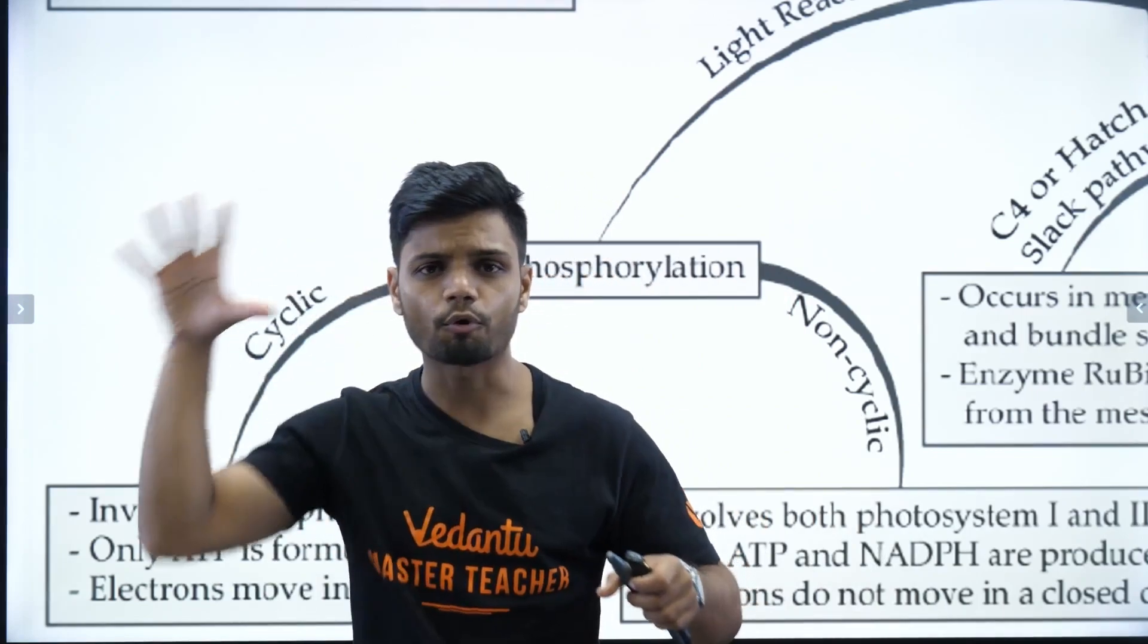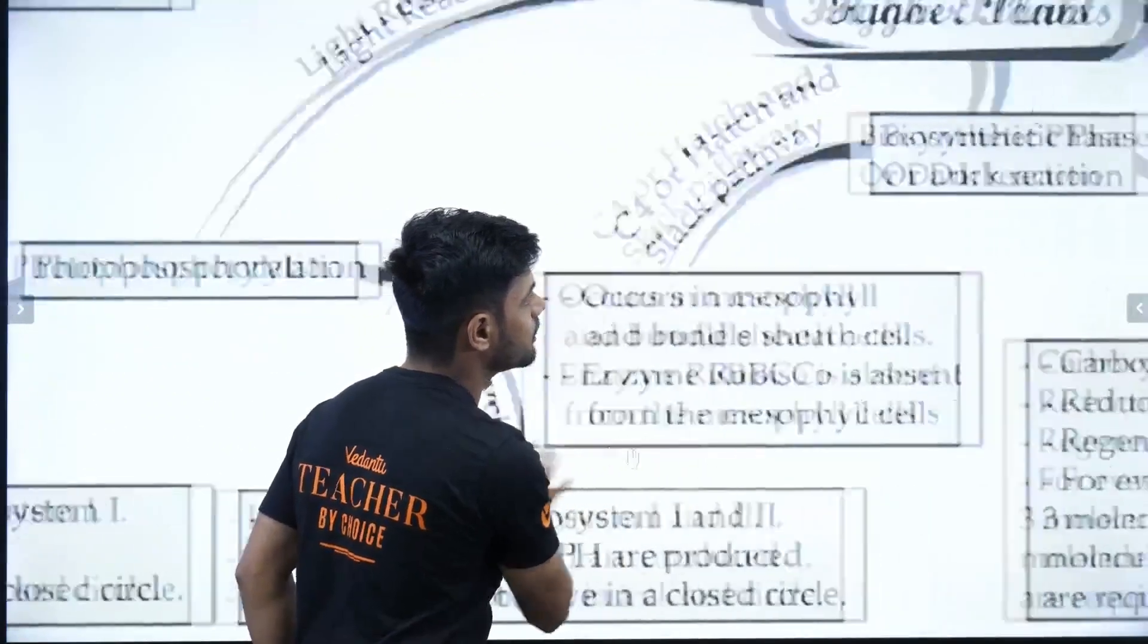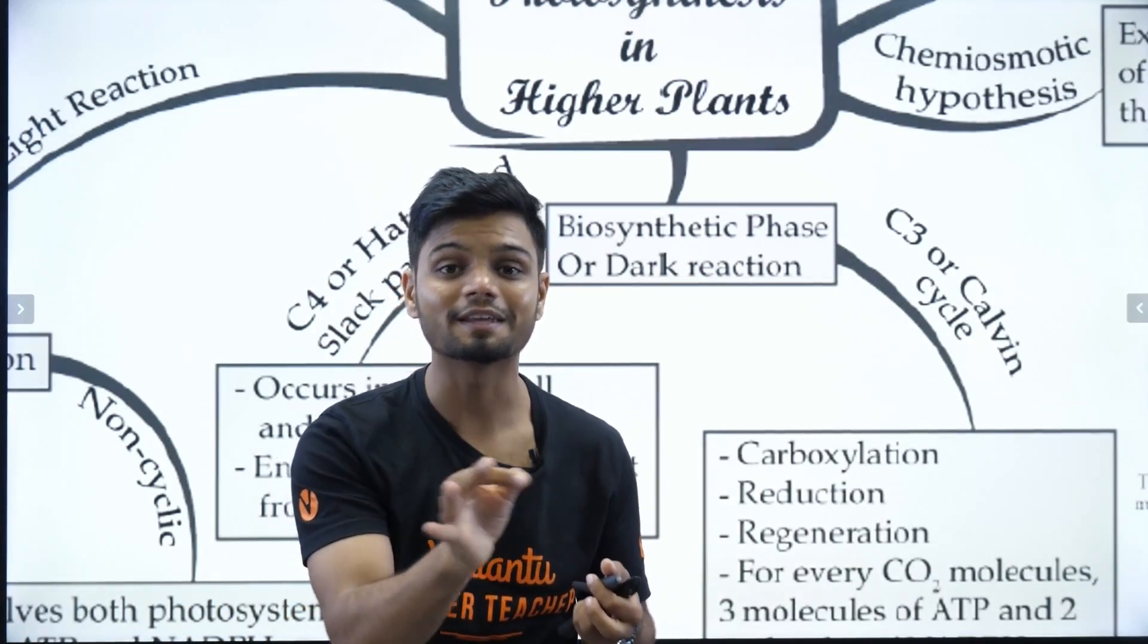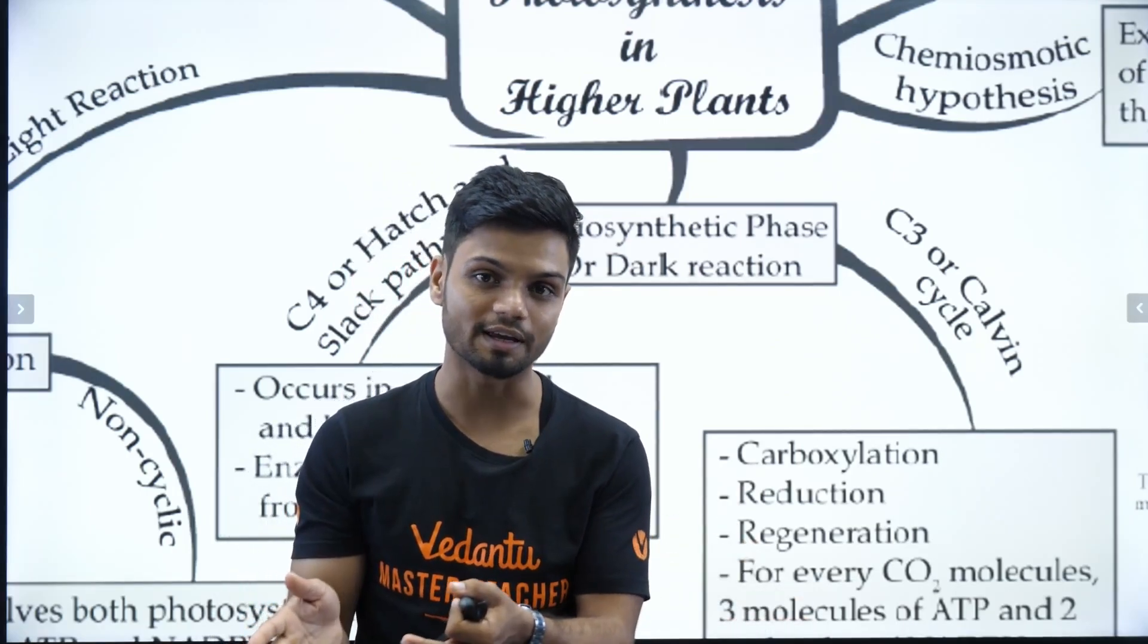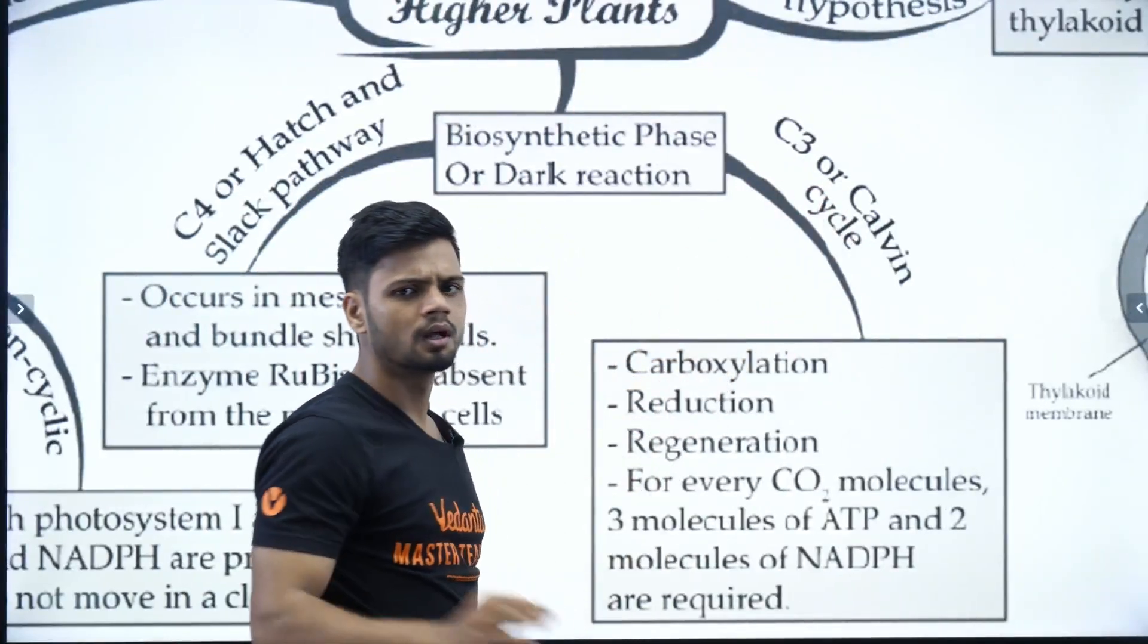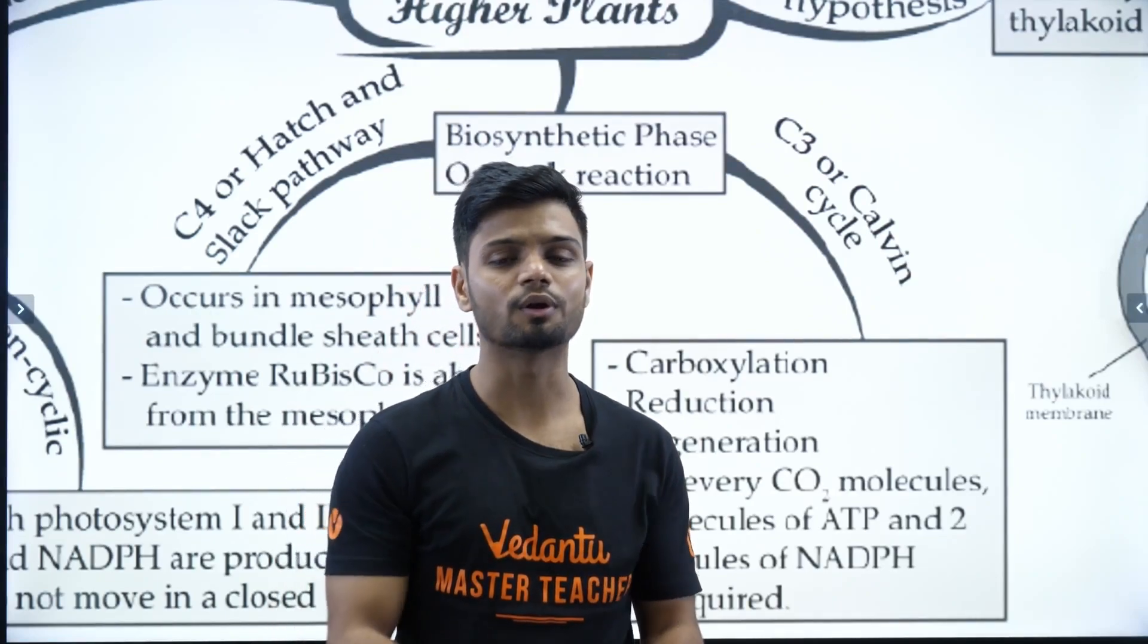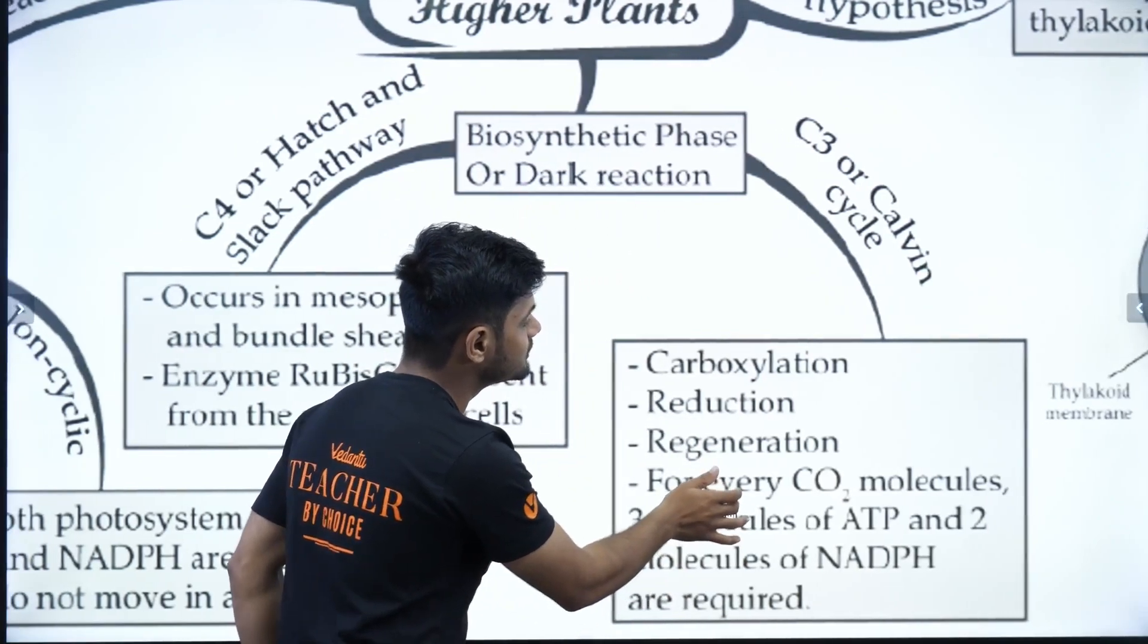Now, whatever the products here are utilized in dark reaction, which is also called the biosynthetic phase. Now, why is it called biosynthetic phase? Because there is production of glucose happening here. Now, here we have something called C3 cycle and C4 cycle. Now, let's focus on C3. C3 is called Calvin cycle. The reason it's called C3 cycle is because the first stable product is a 3-carbon here, which is nothing but PGA, phosphoglyceric acid.